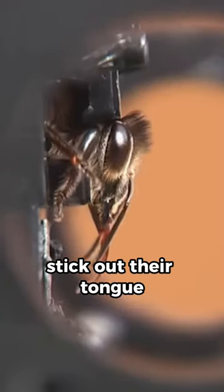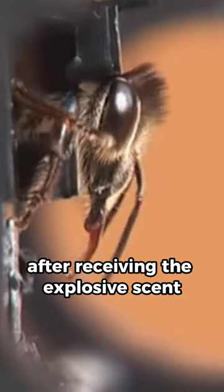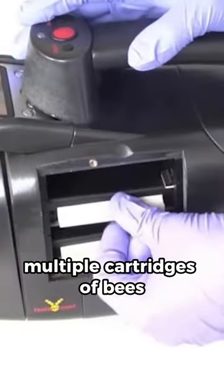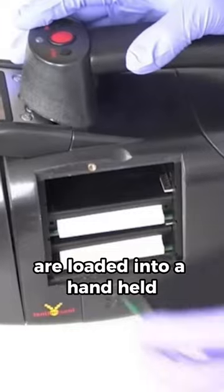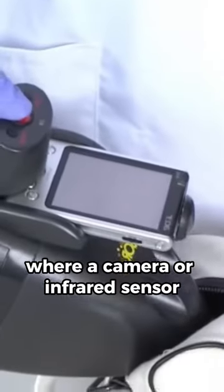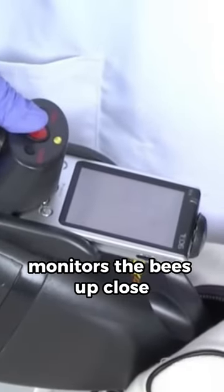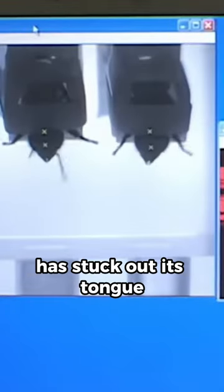Multiple cartridges of bees are loaded into a handheld detection device, where a camera or infrared sensor monitors the bees up close and identifies when each bee has stuck out its tongue.